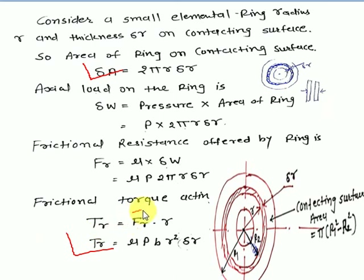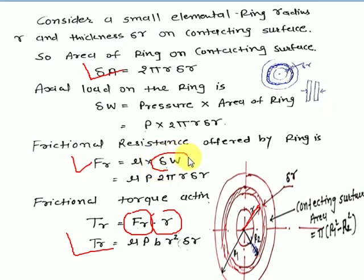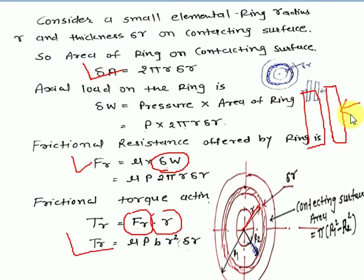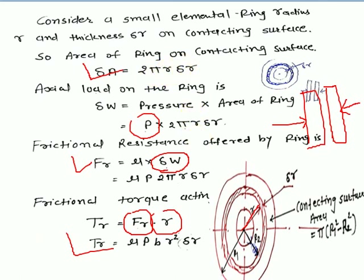Torque equals frictional resistance multiplied by radius r. The frictional resistance fr = μ·δW, where μ is the coefficient of friction of the lining material. δW is the axial load on that small element — it equals pressure p multiplied by the area of the ring: δW = p × 2πr·δr.